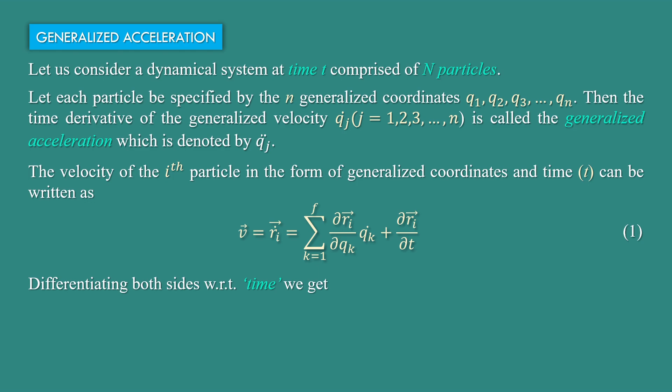Differentiating both sides with respect to time we get: v dot equal to ri double dot equal to d/dt of summation k goes from 1 to f of (del ri by del qk) into qk dot, plus del ri by del t.